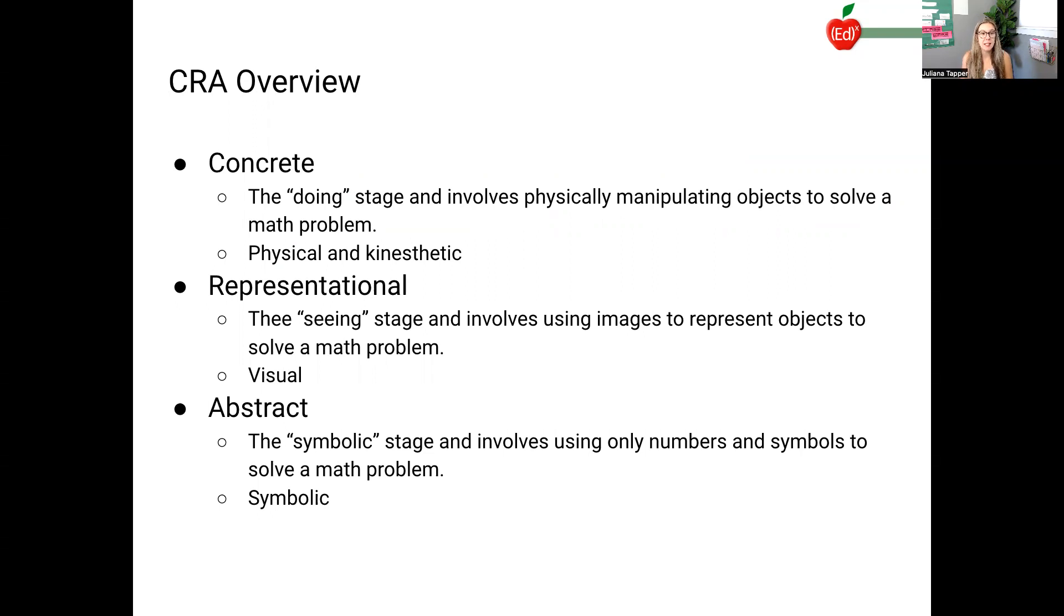Representational is the seeing stage and involves using images to represent objects to solve a math problem. So they're maybe drawing different shapes on their paper and that sort of thing. It's very visual still. And then abstract is the symbolic stage and it involves using only numbers and symbols to solve a math problem. So that's the symbolic stage with our equations and our expressions and all of that.